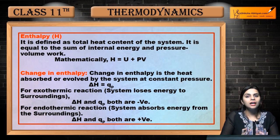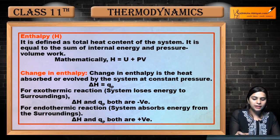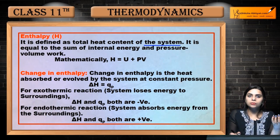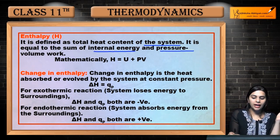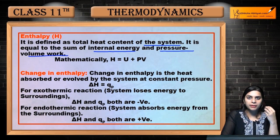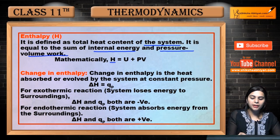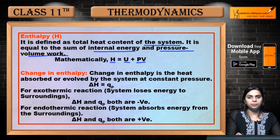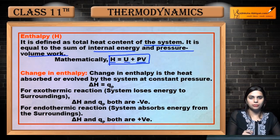Ab hum enthalpy study karenge. Enthalpy kya hota hai? Hum isse H se represent karte hain. It is defined as the total heat content of the system — jitna total heat us system mein hai, woh value enthalpy batata hai. It is equal to the sum of internal energy and pressure-volume work. Mathematically: H = U + PV, where PV means pressure-volume work.